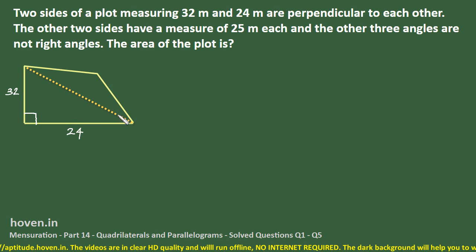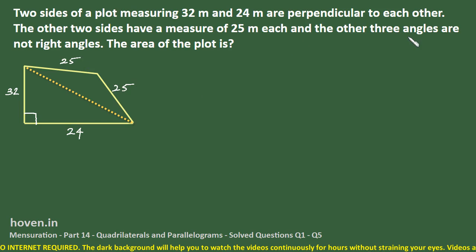And we can take this as the diagonal. The other two sides have a measure of 25, so this is 25 and this is also 25. And the other three angles are not right angles. This means this could be any angle. We have to find out the area of the plot.